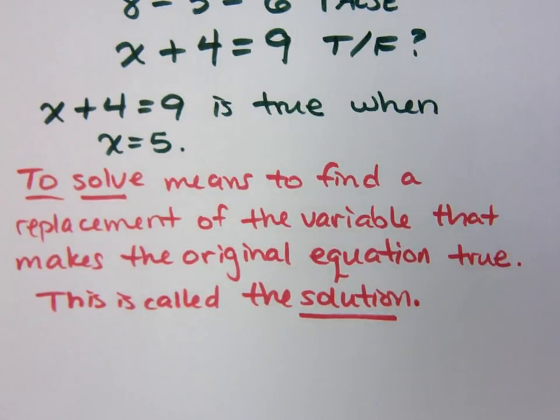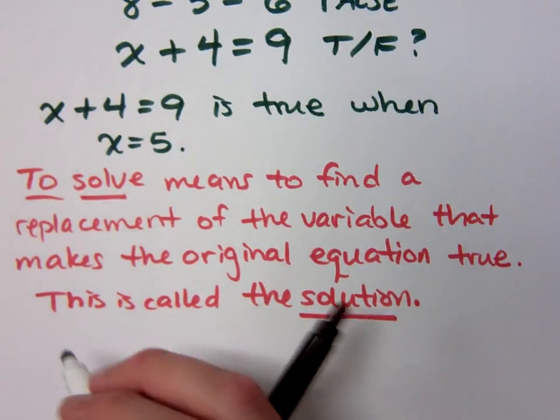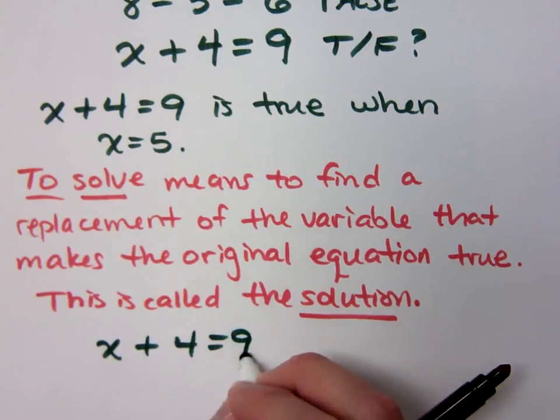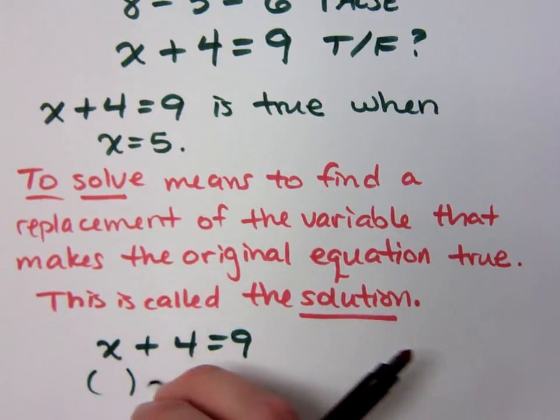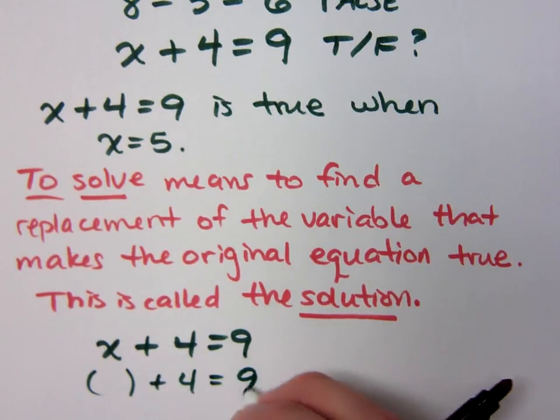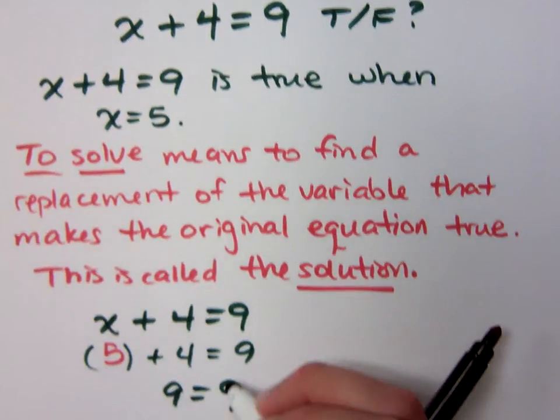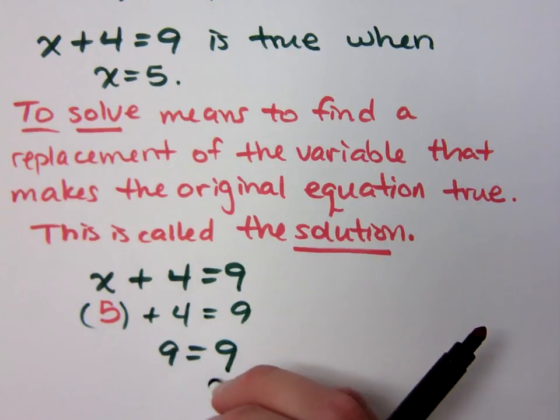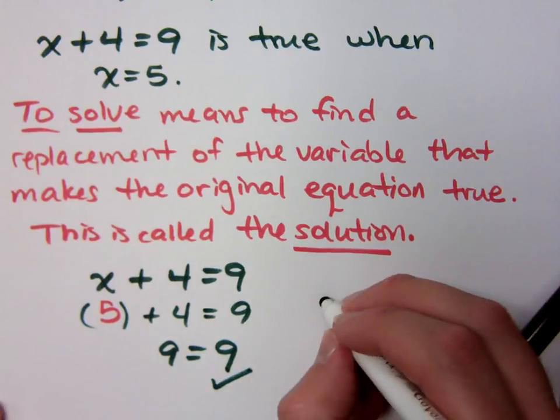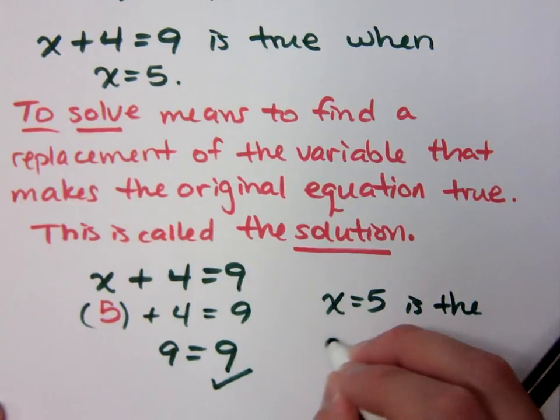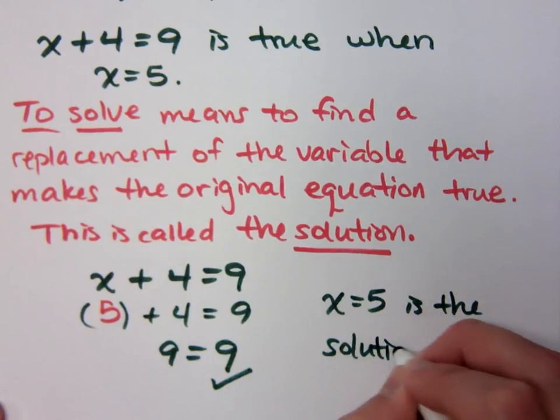So, in this last example, we said that X plus 4 equals 9. And if I replace the X with 5, I come up with a true statement that 9 equals 9, right? So, what that tells me is that X equals 5 is the solution to this particular equation.